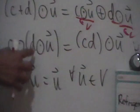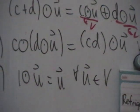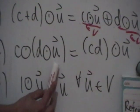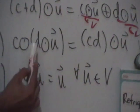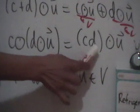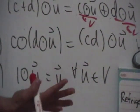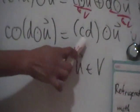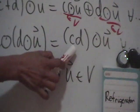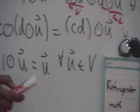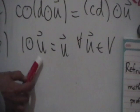Property seven says: C circle-times (D circle-times U) equals (CD) circle-times U. You can do D circle-times U first, then apply C circle-times to that result — or you can multiply the two real numbers C and D together first using ordinary multiplication, and then do (CD) circle-times U. This is the associative property for scalar multiplication.